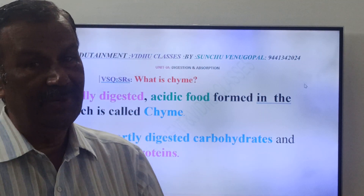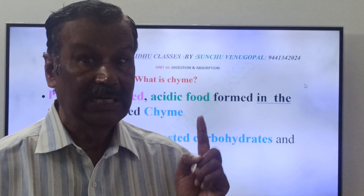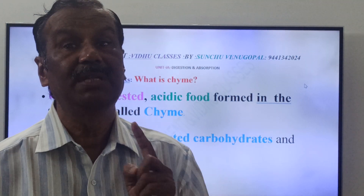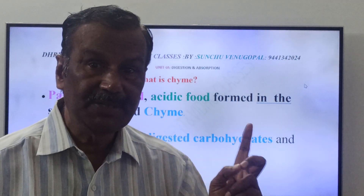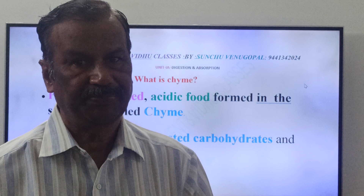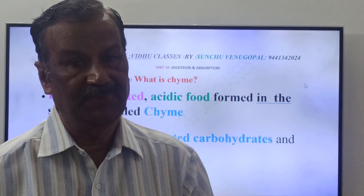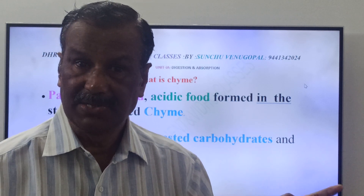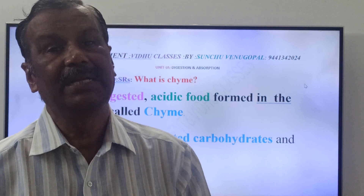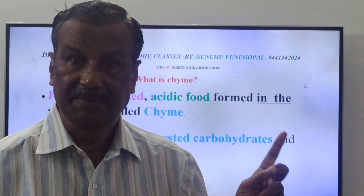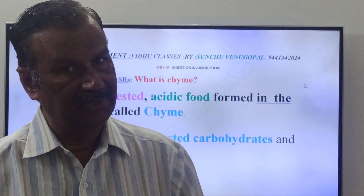Here you remember one point, friends: Chyme is formed in the stomach. Friends, Chyme and Chyle — Chyme is partly digested food, while Chyle is completely digested food. Chyme is partially digested, semi-solid food, whereas Chyle is fluidic food.